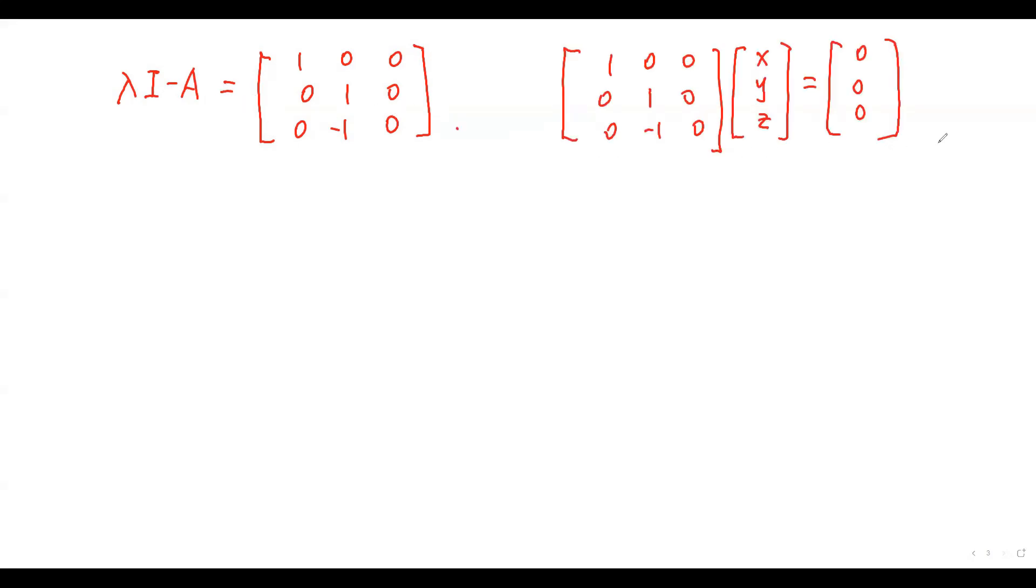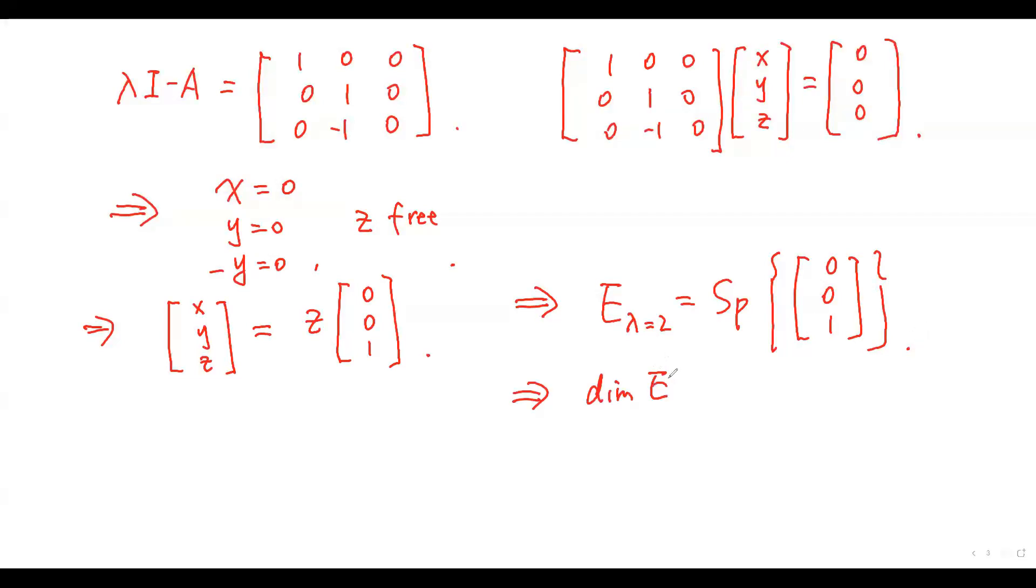Then, the matrix lambda I minus A equals this one. Consider this equation. We obtain the solution X equals 0, Y equals 0, and Z is free. So the solution is this one. So, the corresponding eigenspace for eigenvalue equals 2 equals the space generated by this vector. And consequently, the dimension of this space equals 1.